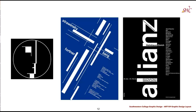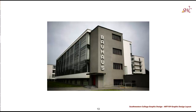Bauhaus literally translates to 'construction house,' and originated as a German school of the arts in the early 20th century, founded by Walter Gropius. The school morphed into its own modern art movement characterized by a unique approach to architecture, design, fashion, and theater. It acted as a hub for Europe's most experimental creatives, with well-known artists such as Joseph Albers, Wassily Kandinsky, and Paul Klee offering their expertise as instructors.